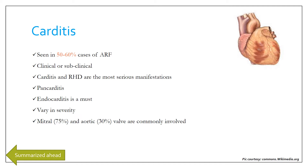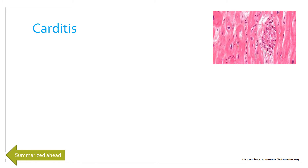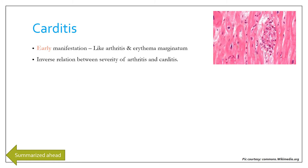It varies in severity. The mitral valve is the most commonly involved valve, seen in around 75% of cases; the aortic valve in 30%; and tricuspid and pulmonary valves in less than 5% of cases. Isolated right-sided cardiac involvement is very rare. Carditis is also an early manifestation of rheumatic fever, like arthritis and erythema marginatum.